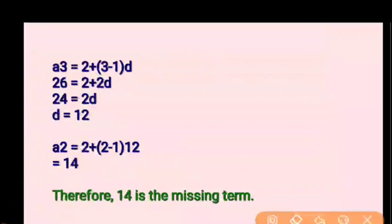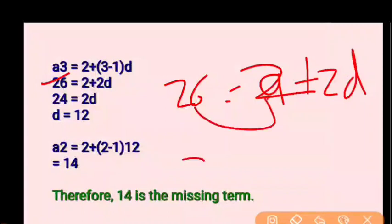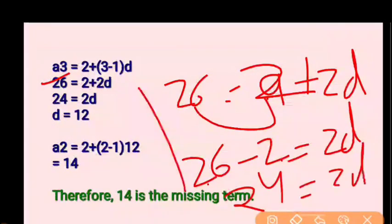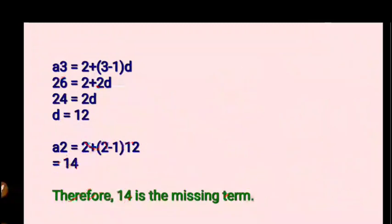If we substitute that value: 26 = 2 + 2D. So 26 − 2 = 2D, which gives 24/2 = D. Therefore D = 12. Now that we know the common difference, we can find any value in the AP.